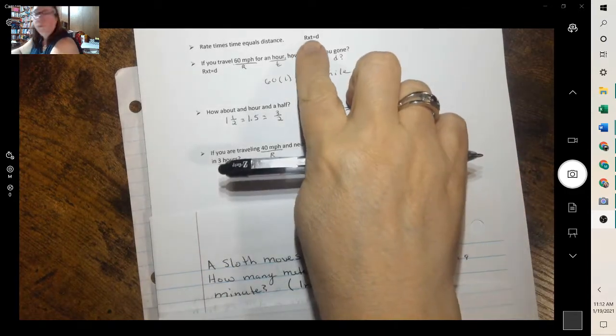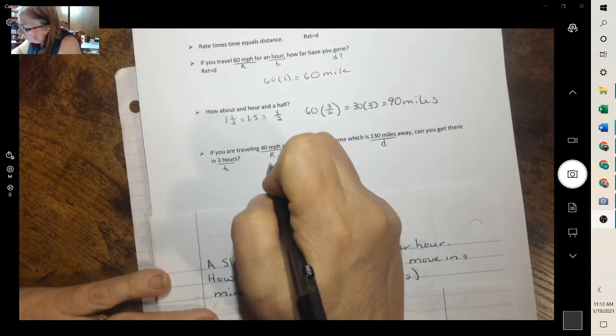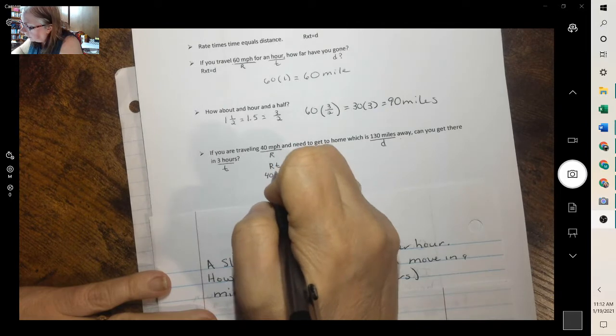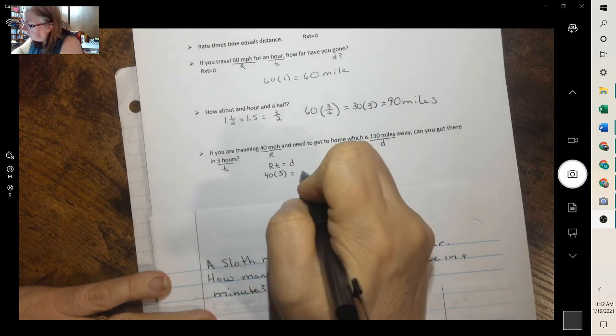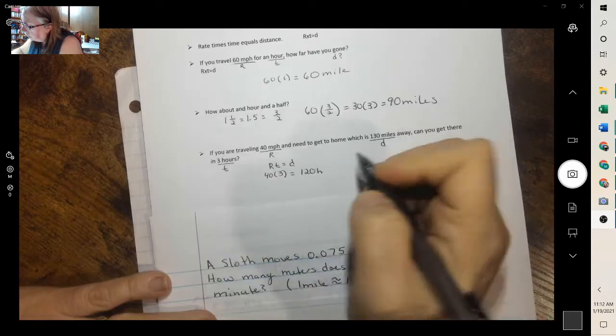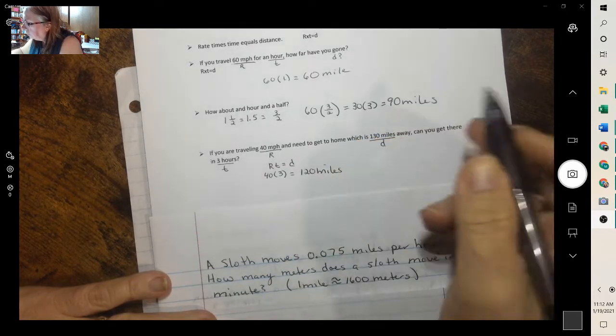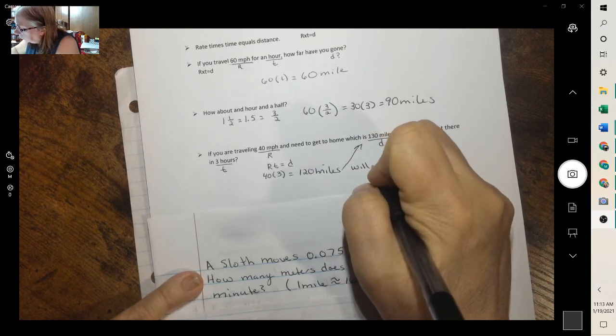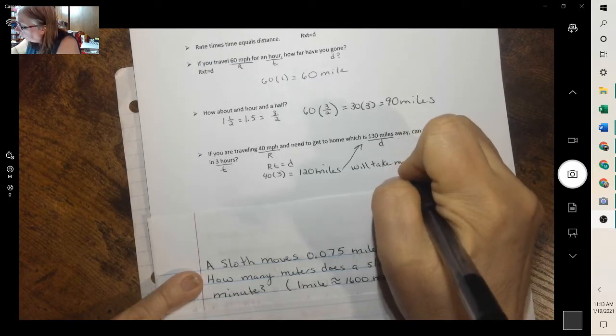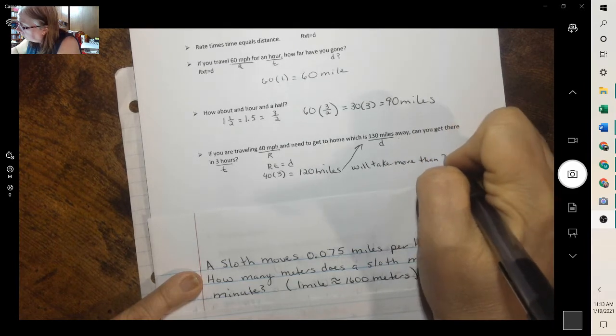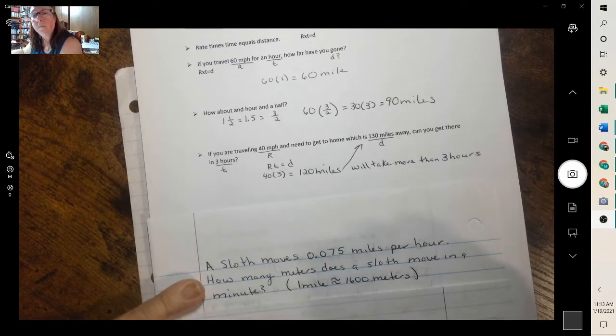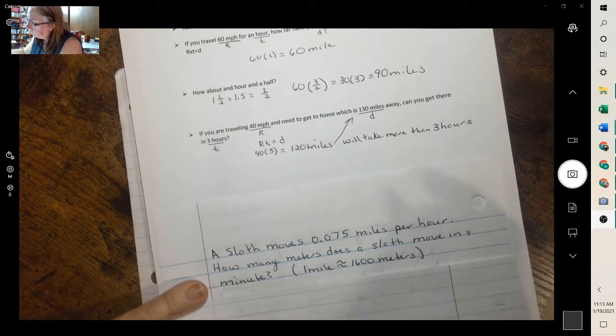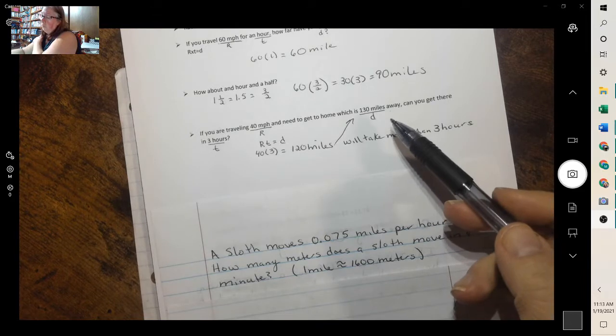Well, it's easiest to just multiply first. So we'll use the rate and the time and see if it equals the distance. So our rate is 40 times our time, which is 3. Well, that gives us 120 miles. So 3 hours is not enough time. It'll take more than 3 hours.